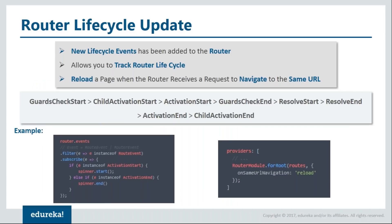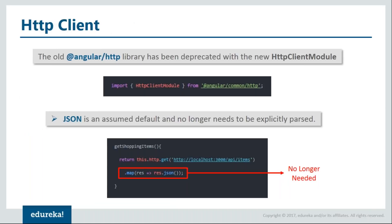There have also been changes in the router. Additional events have been added to the router lifecycle: ActivationStart, ActivationEnd, ChildActivationStart, and ChildActivationEnd. This makes it easier for developers to track the router lifecycle — for example, displaying a spinner while child components are being loaded, as shown in the code. Also, with the new router it's now possible to reload a page when the router receives a request to navigate to the same URL, which was previously very difficult to achieve.